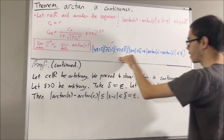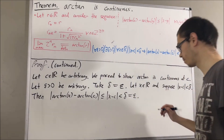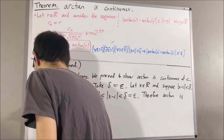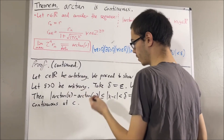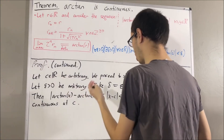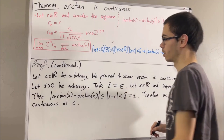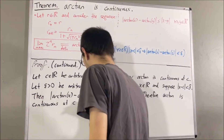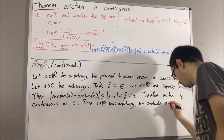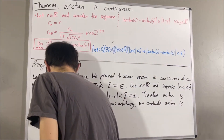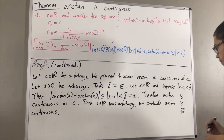So we have proven this statement, which proves that the arctangent function is continuous at c. Since c was an arbitrary real number, this means we have proven that the arctangent function is continuous at every real number — in other words, the arctangent function is continuous. And so this completes the proof.